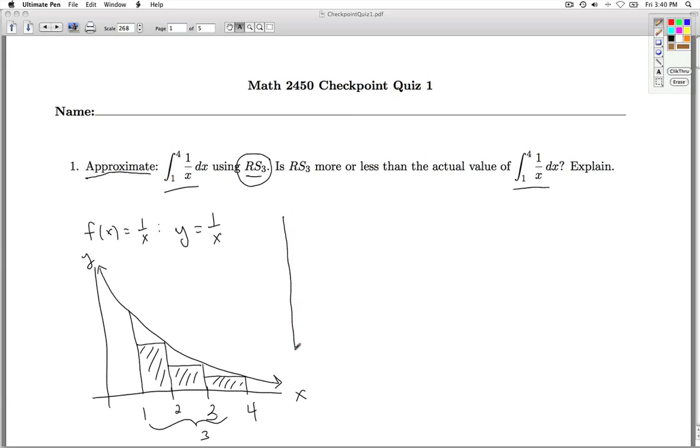Okay, so let's actually compute RS3. We just need to add up the area of each of these rectangles. The area of a rectangle is the base times the height. The first rectangle, the base is just one unit. How do we find the height of this rectangle?